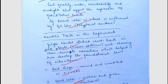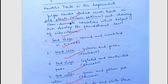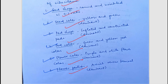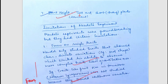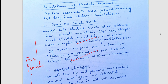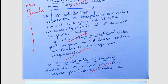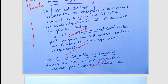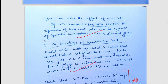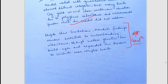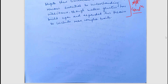Mendel's seven contrasting characteristics are also mentioned: seed color, seed shape, pod shape, pod color, flower color, flower position, and plant height — you can pause and revise these. The limitations of Mendel's experiment include: focus on simple traits only, ignoring deeper concepts of genetics, ignoring linkage, no consideration of epistasis, and no knowledge of quantitative traits. The answer is appropriately concluded and is very well written.